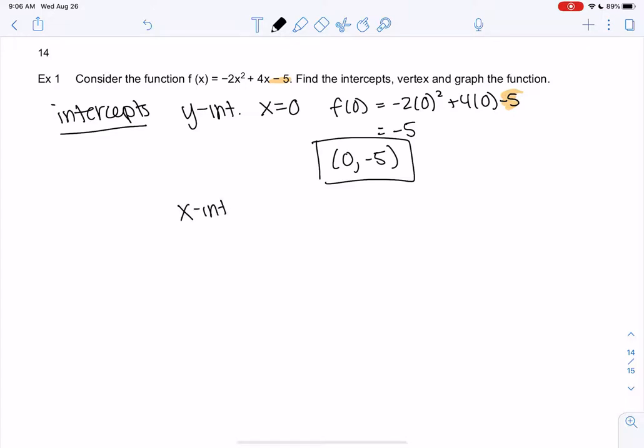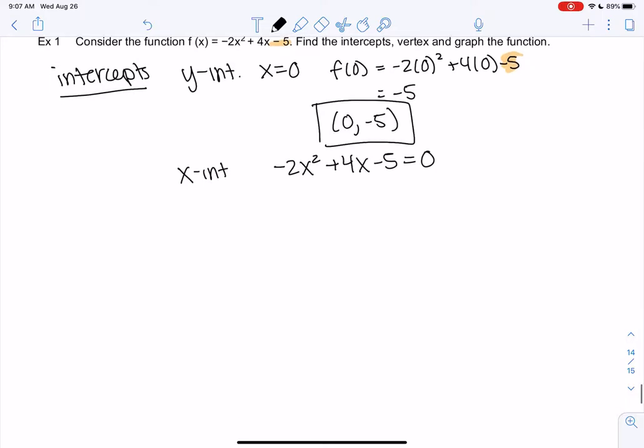My x-intercepts are when we set it equal to 0. Negative 2x squared plus 4x minus 5 equals 0. I don't think this factors. You can try.